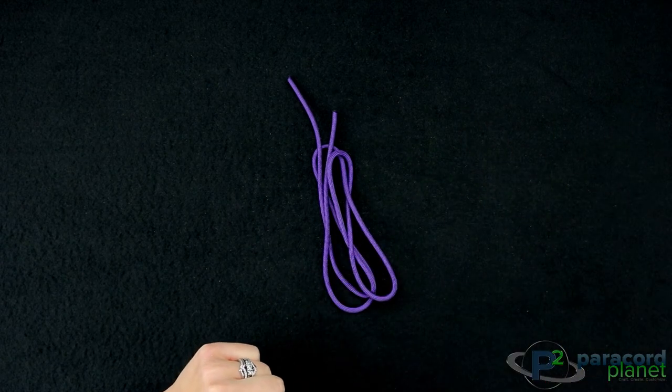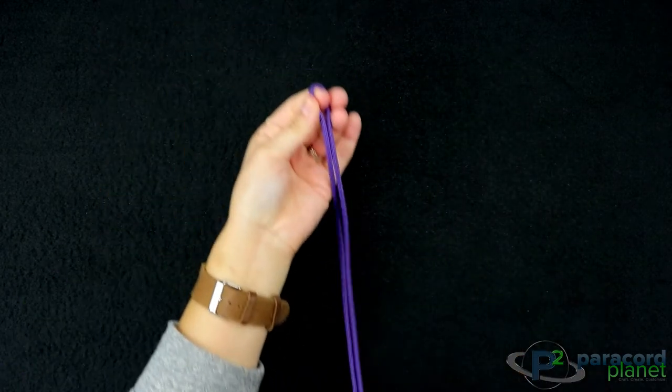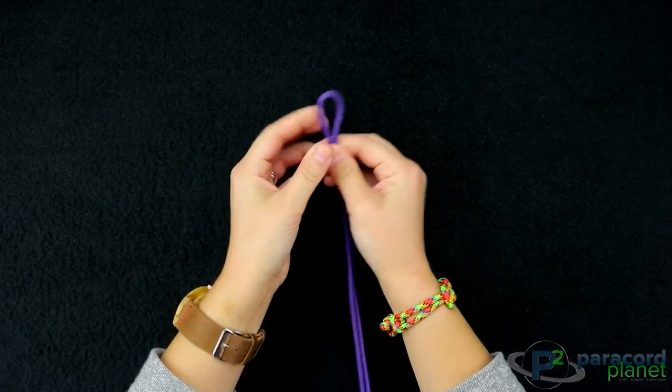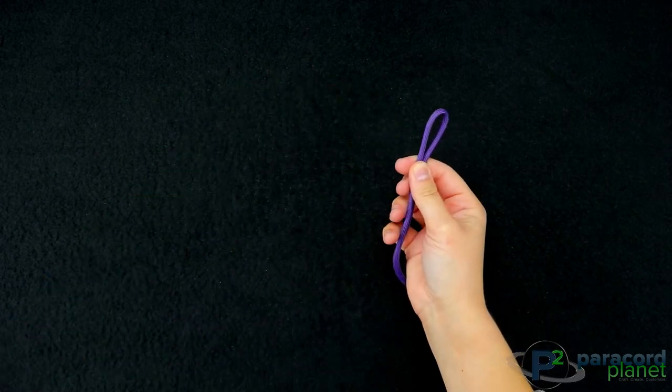So the first thing that you want to do is get to the halfway point of your paracord. To form the clasp part right here, all we're going to do is a little snake knot.